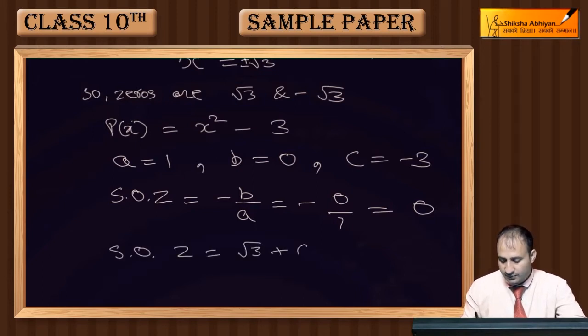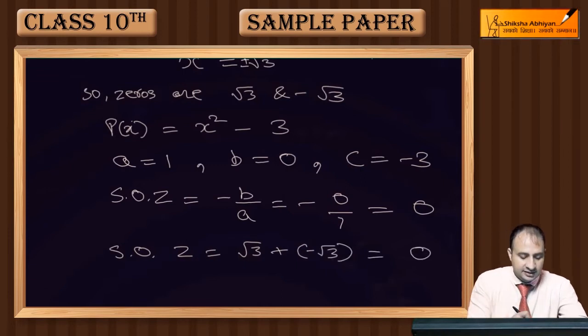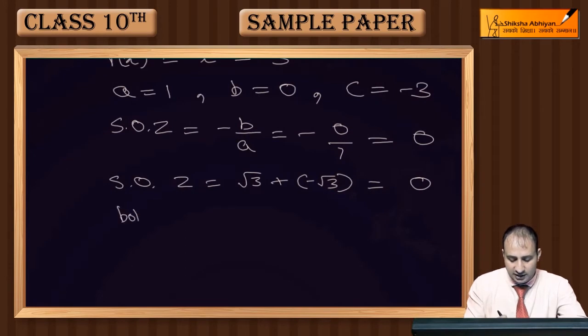If we directly find the sum of zeros from our calculated zeros: √3 + (-√3) = 0. This will also be 0.